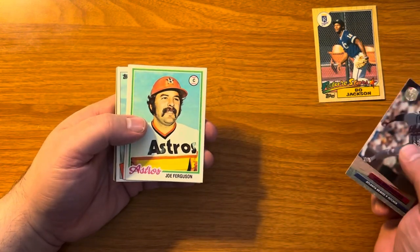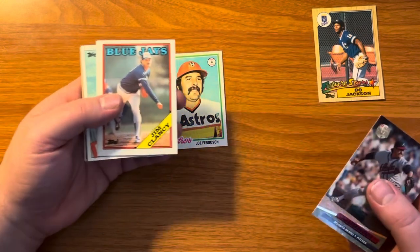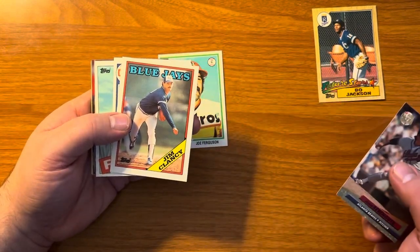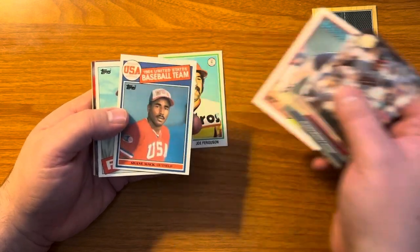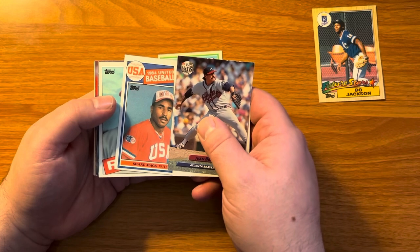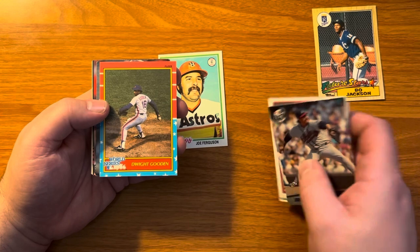This is Juan Berenguer. Joe Ferguson from 1978. Jim Clancy. Oh, I see a USA. Did I speak too soon? Is this a Maguire? No. Shane Mack. Not the Maguire. Jay Tibbs. We got another one of these. Dwight Gooden.